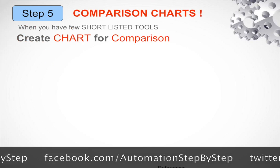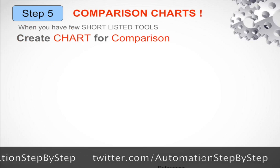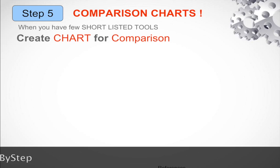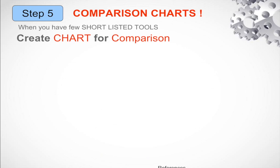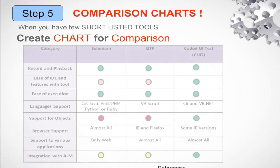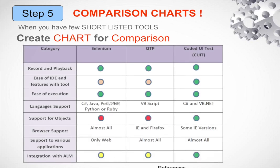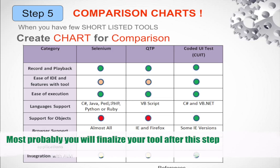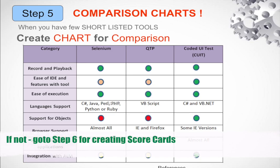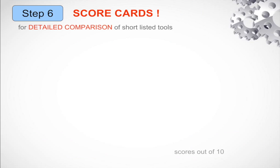Step number five: create a comparison chart. By now you have a very short list of tools. You list down all your requirements or categories, then list your tools, and check or uncheck against every requirement for each tool. In most cases after this step you should have your required tool. However, in some cases you might need to go to step number six, which is creating scorecards — a detailed comparison of your shortlisted tools.